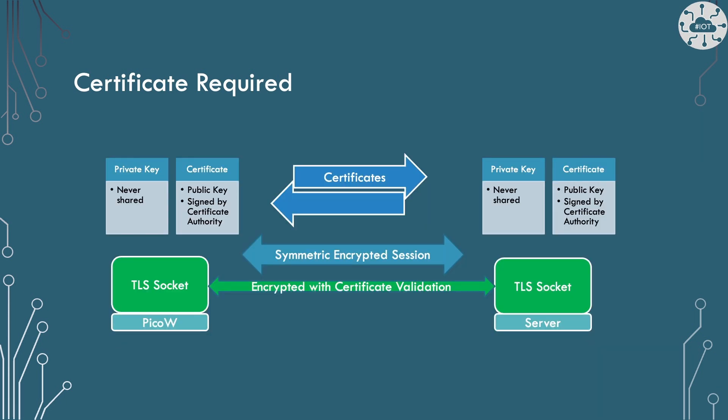TLS establishes a secure and encrypted session between the two parties. At a high level, TLS starts by exchanging certificates and negotiating the encryption for a symmetric encrypted session. Public key cryptography is great but very processor intensive, so TLS only uses it for establishing a symmetric key and algorithm to encrypt the data traffic.